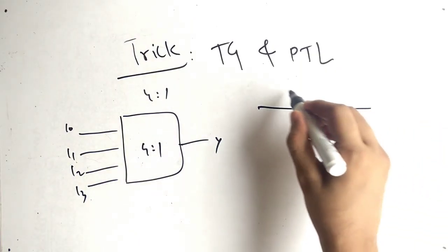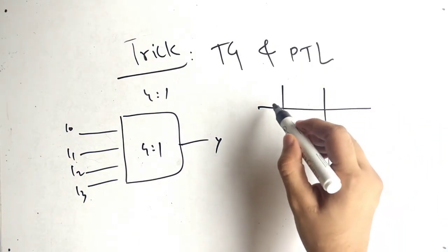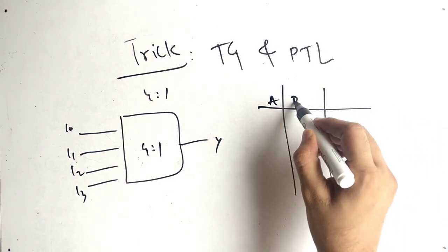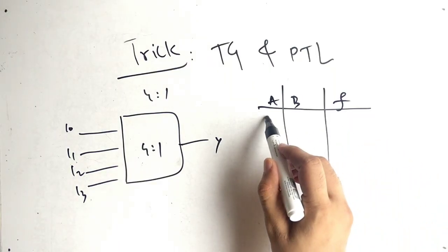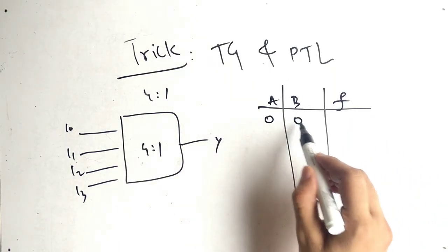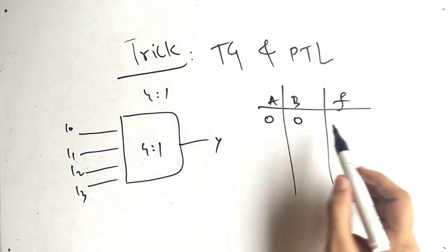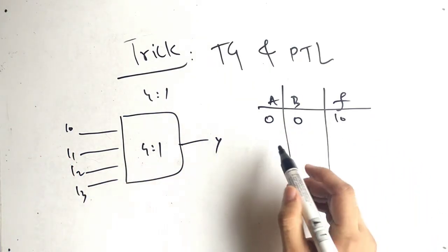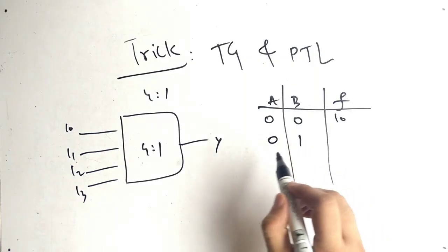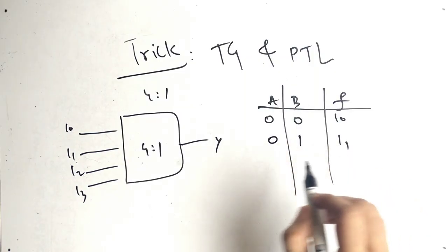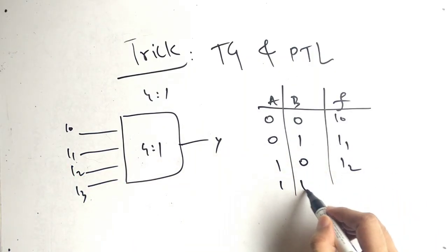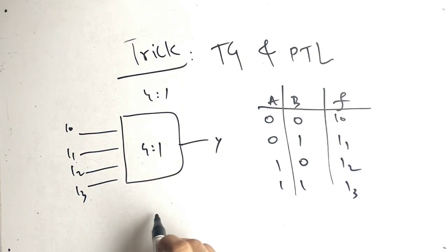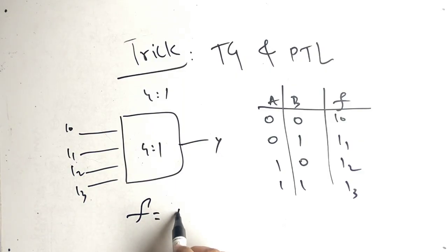Let's build the truth table. We have select lines A and B, and output F. If A=0, B=0, we get output I0. If A=0, B=1, we get I1. If A=1, B=0, we get I2. If A=1, B=1, we get I3.